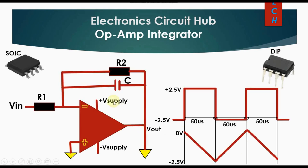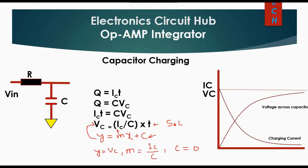This is the circuit diagram of the op-amp integrator circuit — specifically the practical op-amp integrator circuit. A capacitor is connected in the feedback path and a resistor is connected at the input side. We will see the role of R2 and how a square wave can be converted into a triangular wave using a numerical example.